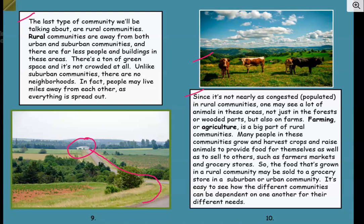Since it's not nearly as congested or populated in rural communities, you may see a lot of animals — not just in the forests or wooded parts, but also on farms. Farming or agriculture is a big part of rural communities. Many people in these communities grow and harvest crops and raise animals to provide food for themselves as well as to sell to others, such as at farmers markets and grocery stores. The food grown in a rural community may be sold to a grocery store in a suburban or urban community.